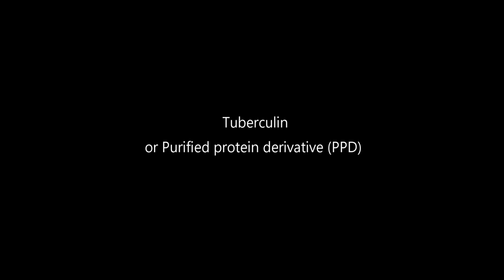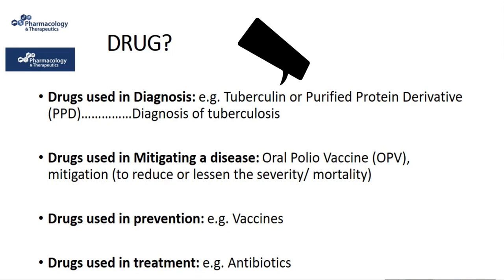Tuberculin, or purified protein derivative, is used in the diagnosis of tuberculosis. The term mitigation here means to reduce the severity of a disease. For example, oral polio vaccine is used in many countries in an attempt to lessen the number of cases resulting from polio virus.